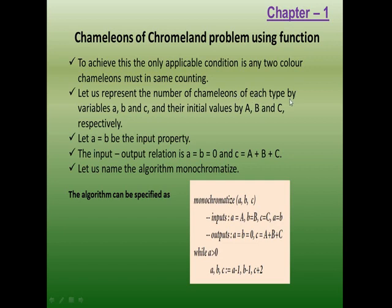Let us represent the number of chameleons of each type by the variables A, B, C with initial values A, B, C. See the function name with three variables: the input is small a = capital A, that is first chameleon, second chameleon, third chameleon. The input property is A and B must be in the same number. The expected output is A and B, which are the same size, must become 0, and the third type must be the summation of all three. The condition is: if A and B decrease by 1, then C increases by 2. As it uses a while loop, it is called iteration.